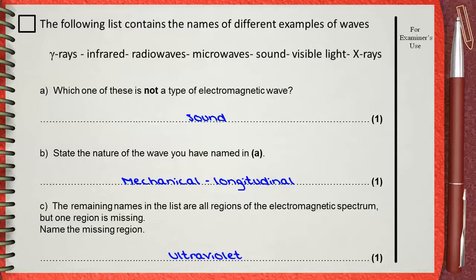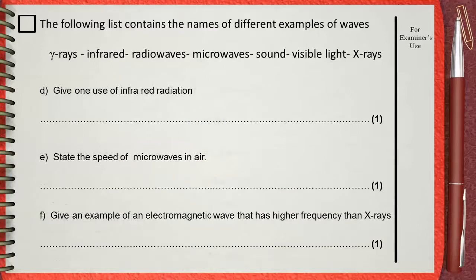Let's see three more questions. D. Give one use of infrared radiation. E. State the speed of microwaves in air. F. Give an example of an electromagnetic wave that has higher frequency than X-rays.